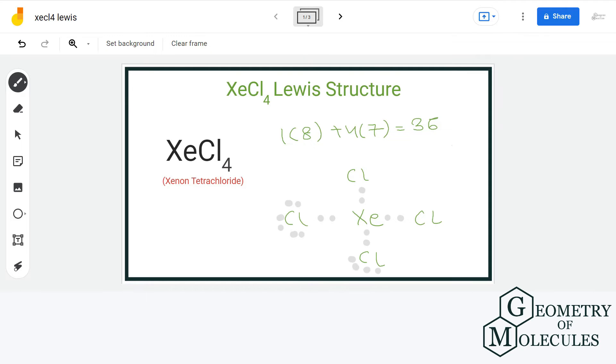If you see, chlorine atom needs 6 more electrons for complete octet. So we will assign 6 to each chlorine atom and by doing so we will be using up total of 28 electrons and we are still left with 4 more.